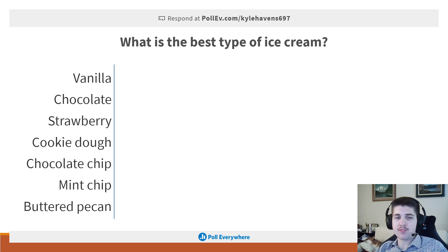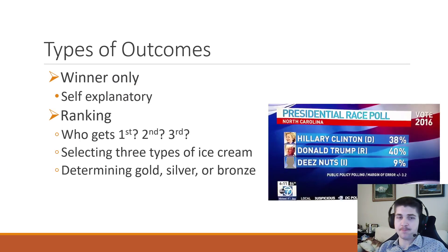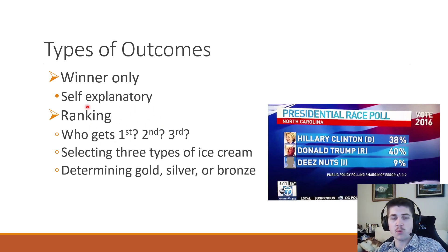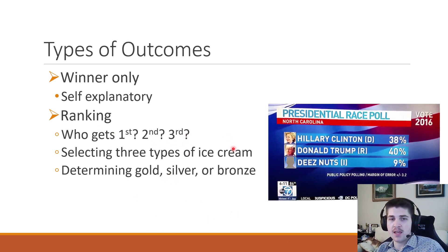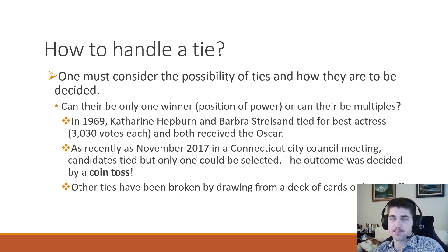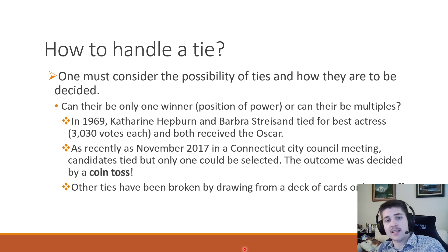Coming back to types of outcomes: a lot of times it will be winner-only, but in your homework and online activities you'll often be asked to rank them all too. When looking at data in examples, we'll often try to figure out a complete ranking — who's going to get first, second, and third. With certain awards, they might give different levels like gold, silver, and bronze.